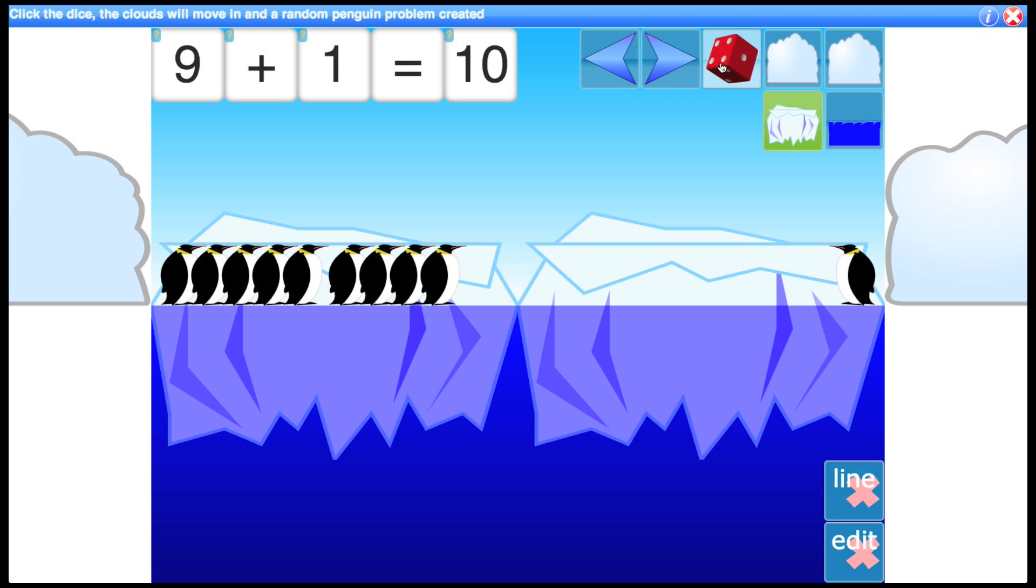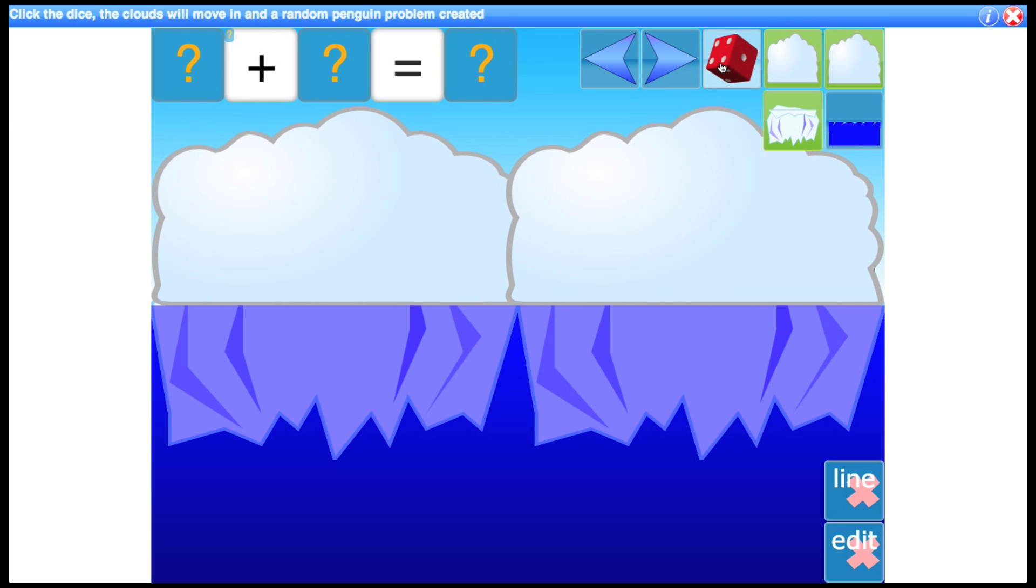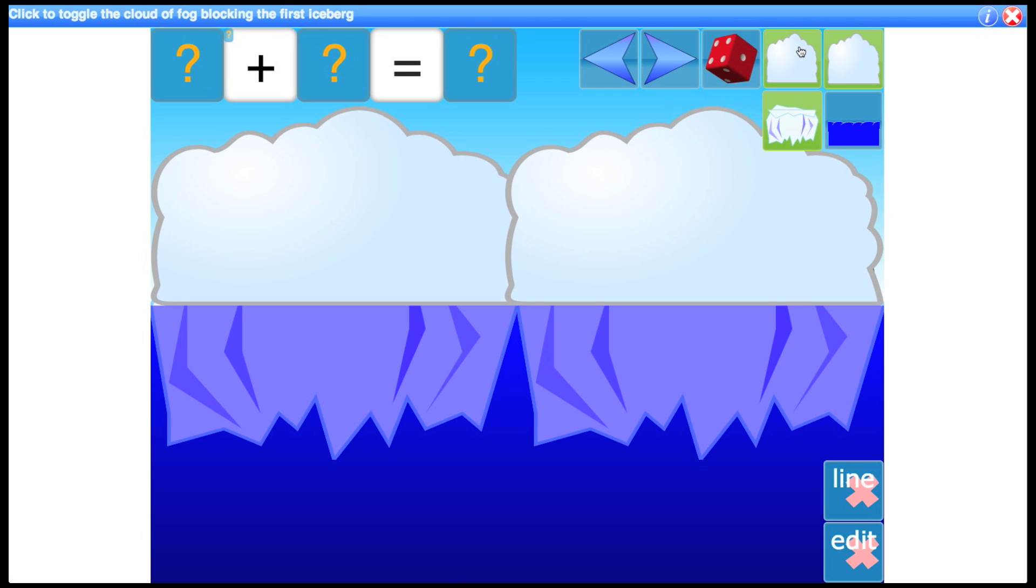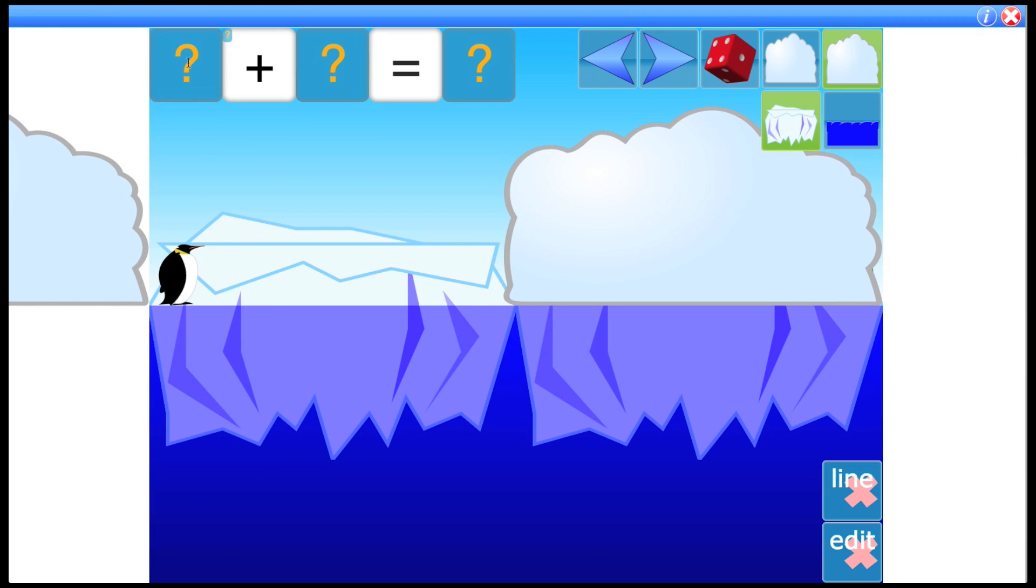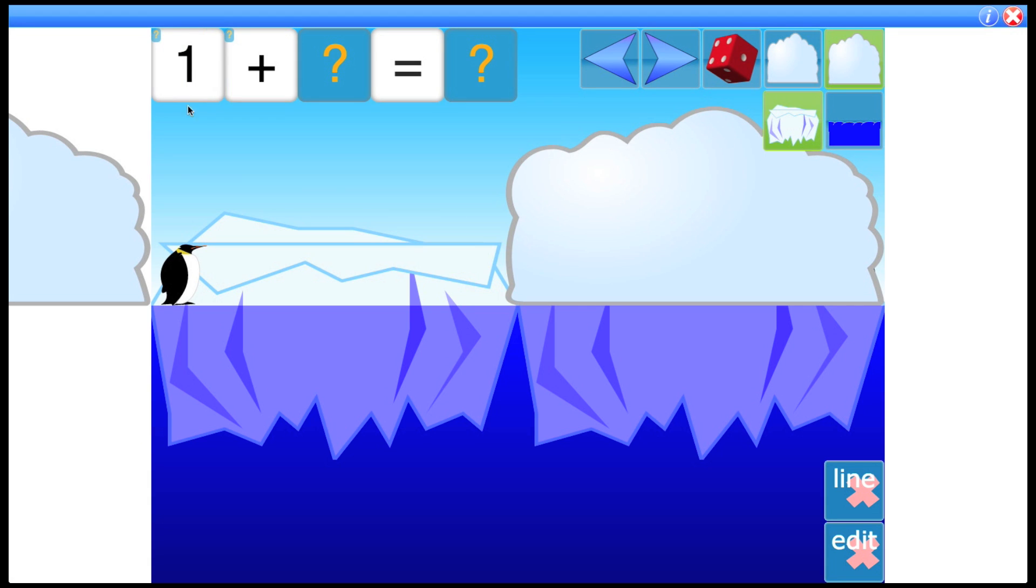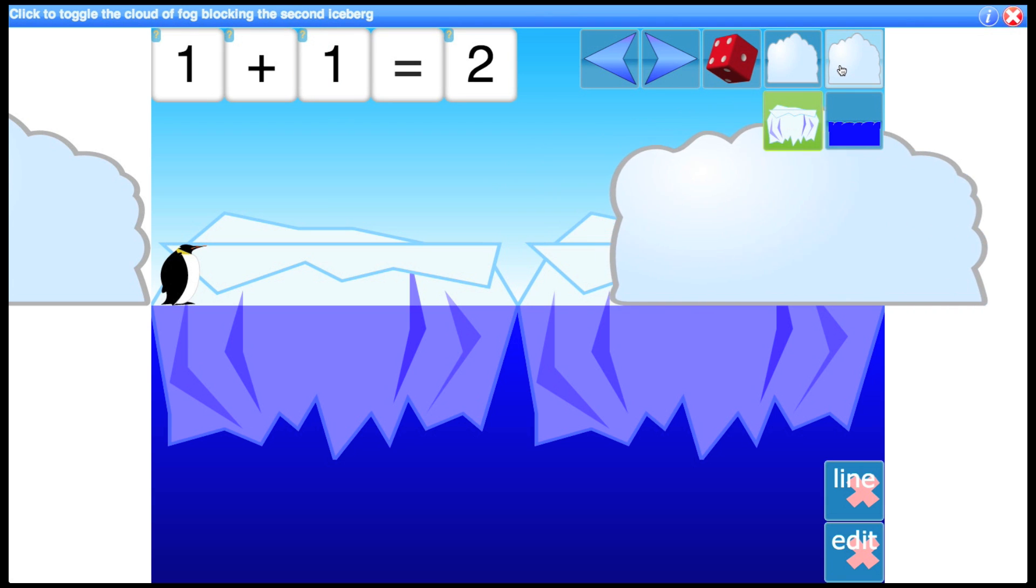Okay, this next control here is a dice, and this generally means some kind of random feature in most of the activities. So when I click it, you'll see the clouds of fog moving and you can't be sure what the actual addition fact is. So the idea is you could reveal parts of the interface. So for example, I could click the cloud here to reveal it and you can see there's one penguin on here, which would mean when I reveal this card here there should be one. We could reveal the total next, for example. So 1 plus question equals 2. So the students would be able to work out that there must be one on the second iceberg, which is correct. So then that can be revealed like so.